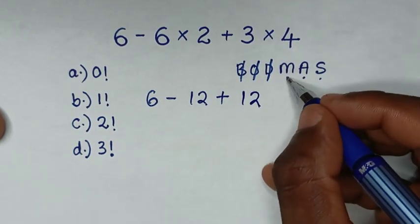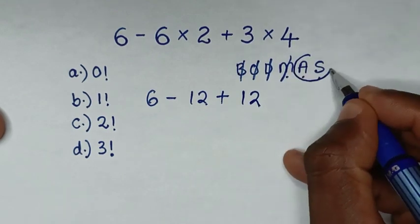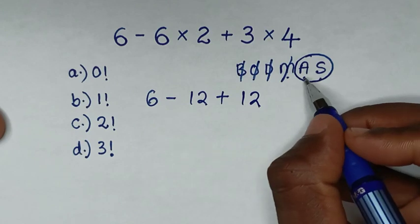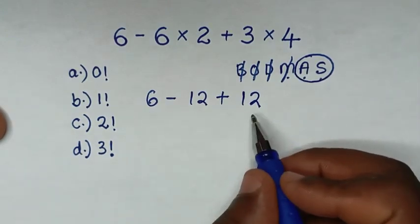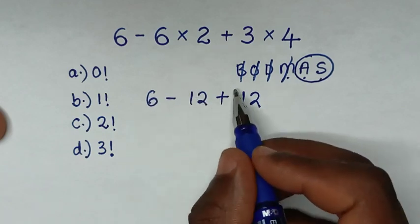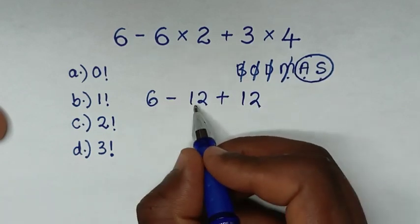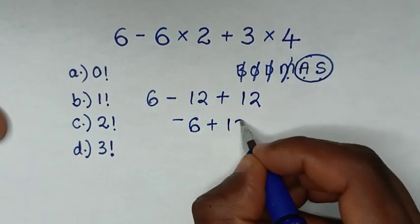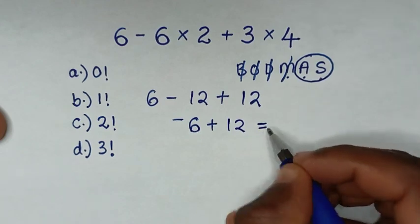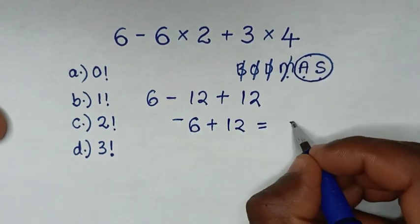Now, after we deal with this multiplication, we are left with this group of addition and subtraction. So we deal with addition and subtraction according to what starts first. In this problem, it starts with subtraction, then addition. So we deal with this subtraction of 6 minus 12 is negative 6, then plus 12. So it will be equal to negative 6 plus 12, which is 6.